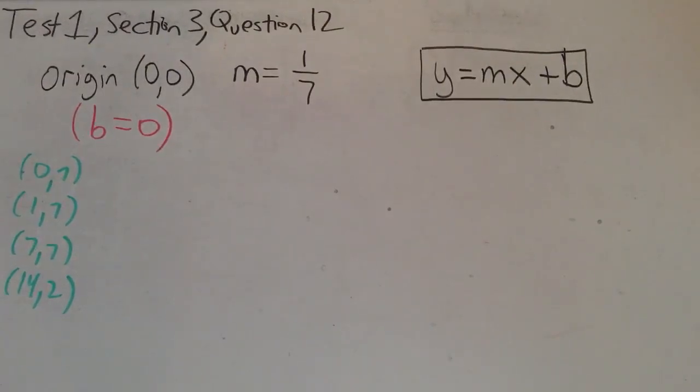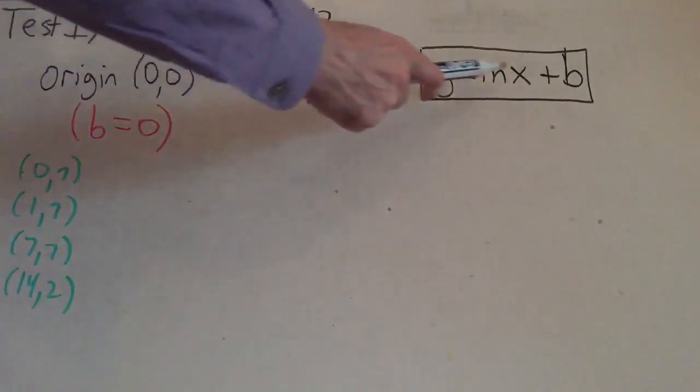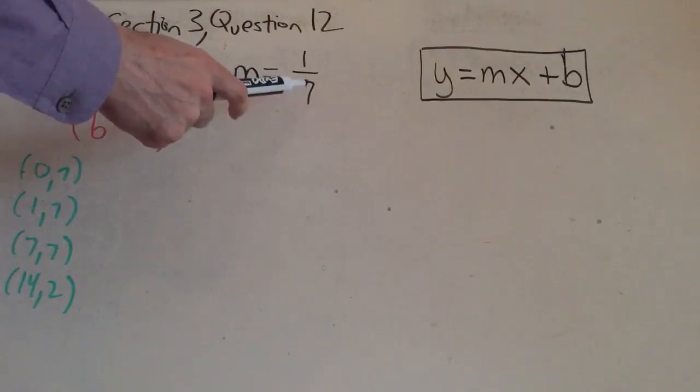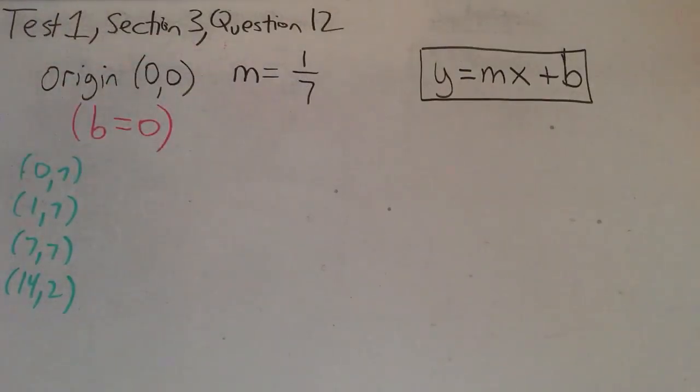So first of all, remember that the slope-intercept form of an equation of a line is Y = MX + B. Here, we're given that M is 1/7, and we're not specifically told what B is,